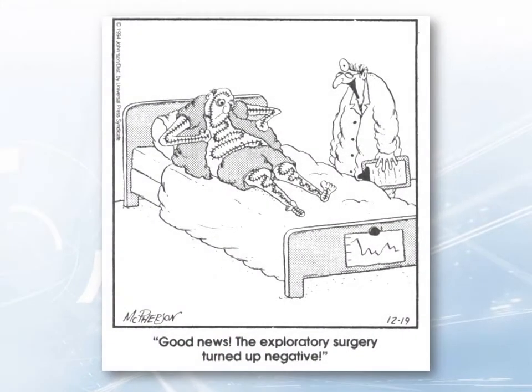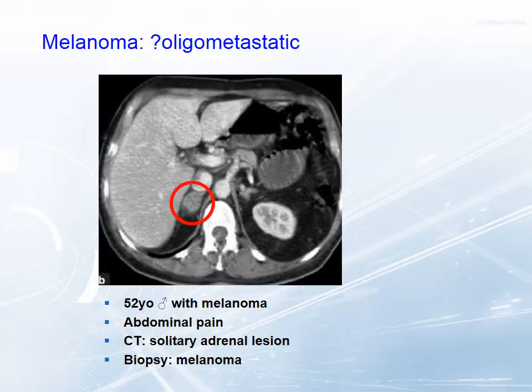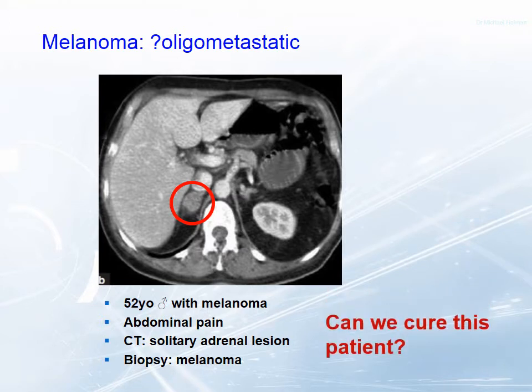This is the way we used to stage cancer. In the 1970s, a staging laparotomy was the most common indication for abdominal surgery. CT has really come along and revolutionized imaging of cancer, and we rarely perform diagnostic laparotomies simply to stage cancer. This is a 52-year-old man with abdominal pain. A CT scan shows a solitary adrenal lesion, which could now be referred to as possibly an oligometastasis. Biopsy confirms melanoma. Can we cure this patient? That's the real question.